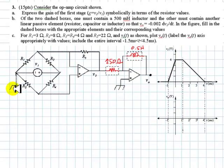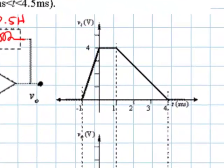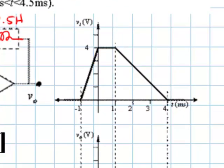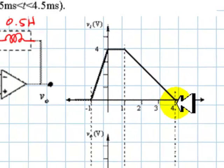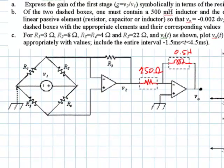Now for part C, we replace all of those resistors by numerical values, like so, 3 ohms and 8, 4, 4 and 22. And the input V1 is a function of time. It's zero all the way to negative 1 ms, and then it ramps up to 4 volts at t equal 0, stays at 4 volts up to 1 ms, and ramps down to 0 and reaches 0 at 4 ms.